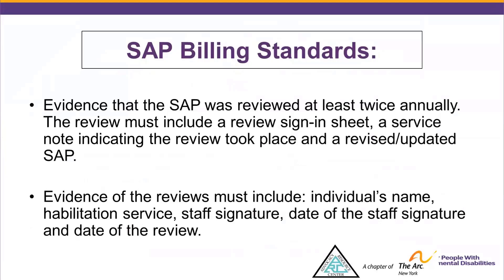This review must include a review sign-in sheet, a service note indicating the review took place, and a revised and updated Staff Action Plan. Evidence of the review must include the individual's name, the habilitation service, the staff signature, and date of the staff signature, and the date of the review.